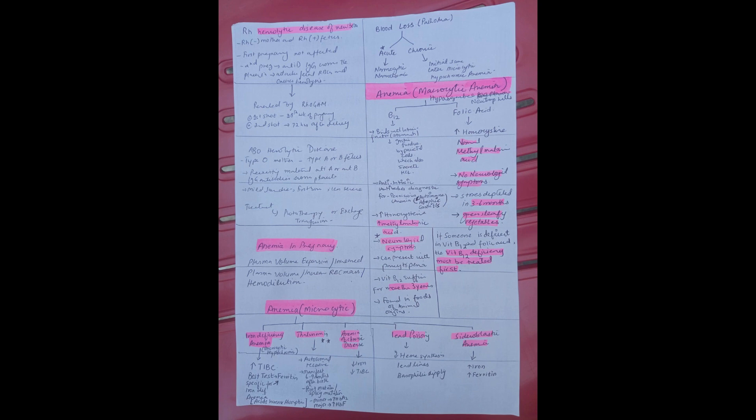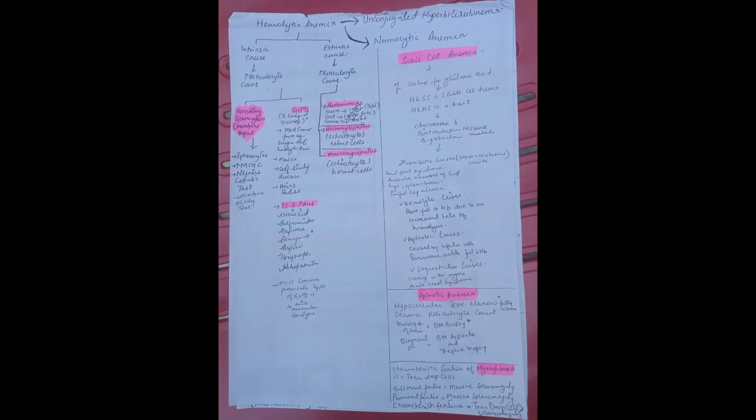Now let's move on to hemolytic anemia. The important thing about hemolytic anemia is that you need to remember that unconjugated hyperbilirubinemia occurs in hemolytic anemia and that is a normocytic type of anemia. There are two types of hemolytic anemia, intrinsic and extrinsic.